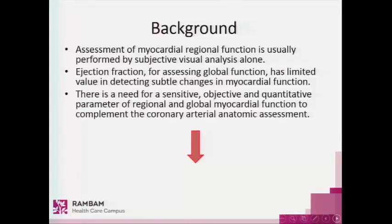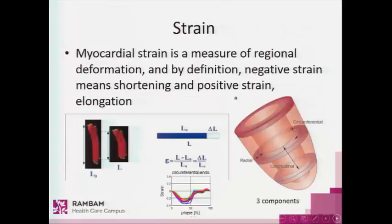This parameter is strain. Myocardial strain is a measure of regional deformation or change, and by definition, negative strain means shortening and positive strain means elongation. We have three components of myocardial strain: the radial, longitudinal, and circumferential. The radial is usually positive, and longitudinal and circumferential are negative because of the shortening.